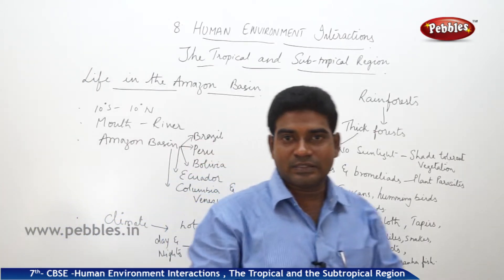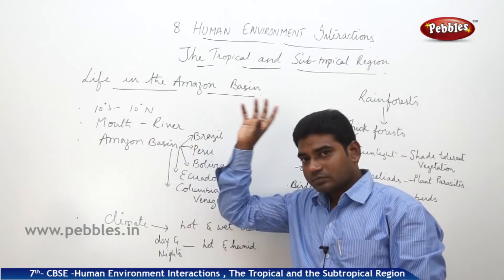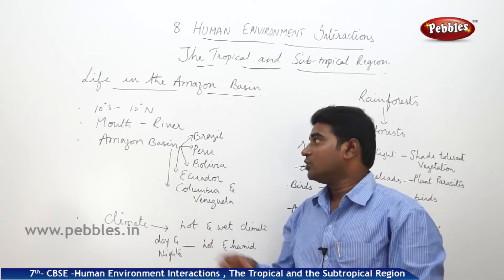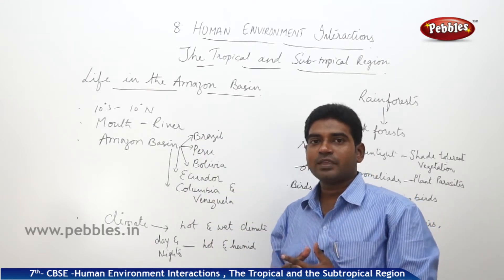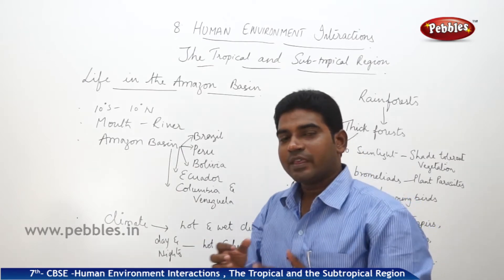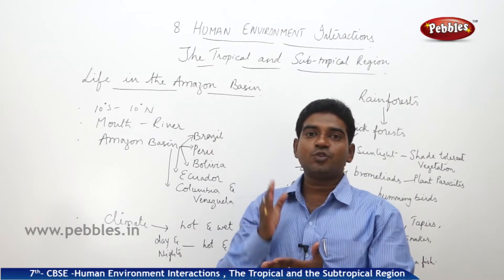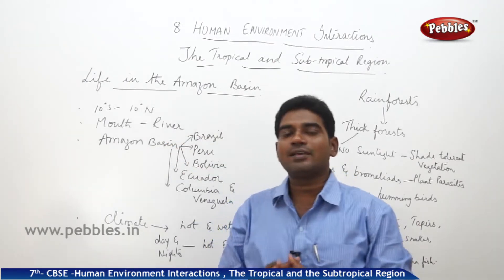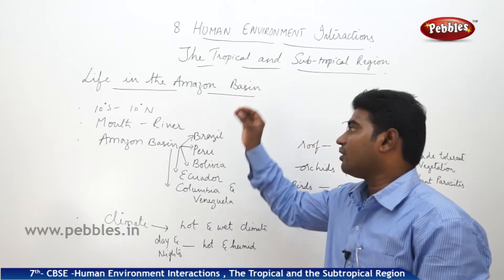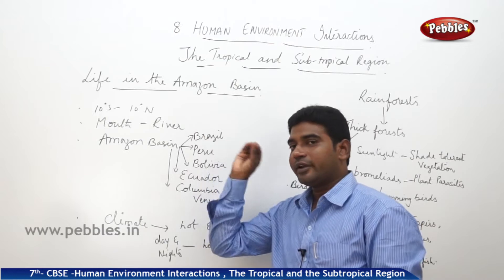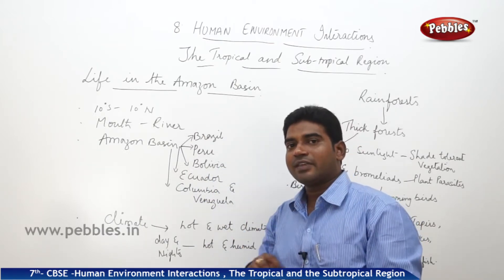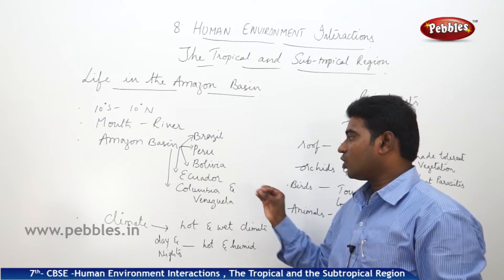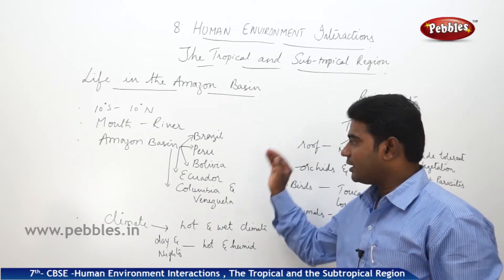Amazon basin means a place where different tributaries of the river join together and create a large area. The mouth of a river is where it divides into tributaries and finally joins another water body — a sea or ocean. The Amazon river joins into the Atlantic Ocean. Before that, we have the Amazon basin covering the countries of Brazil, Peru, Bolivia, Ecuador, Colombia, and some parts of Venezuela — nearly six countries.